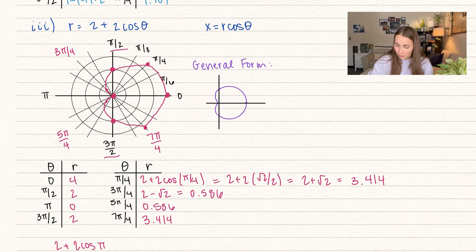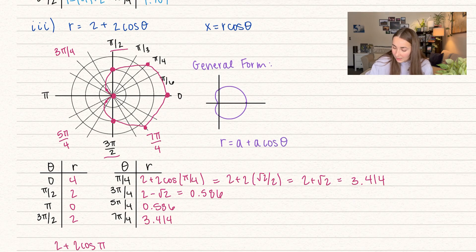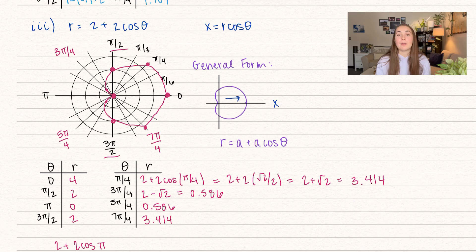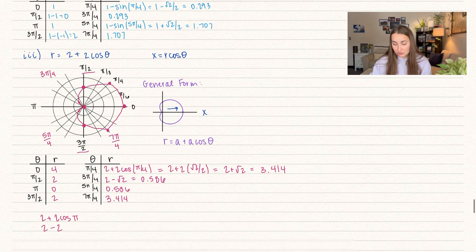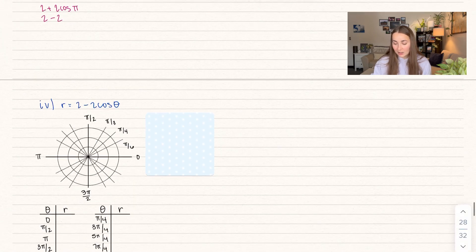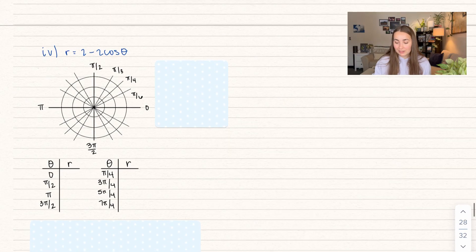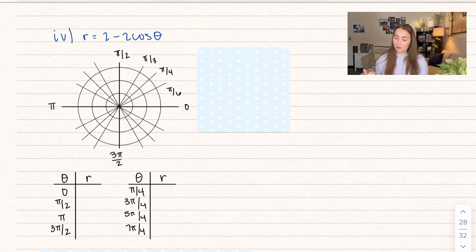Here is the general form: r equals a plus a cosine of theta. We open in the x direction, and since we have a plus, we go in the positive x direction.